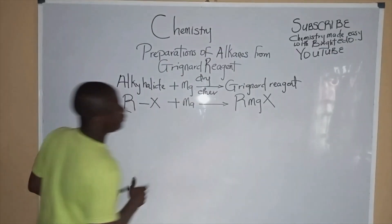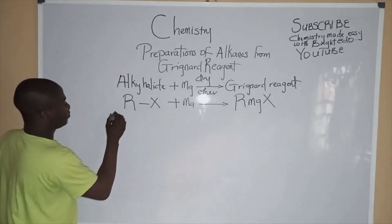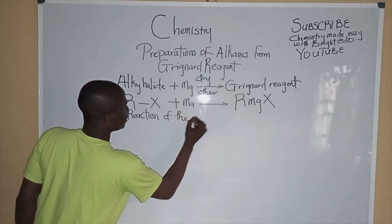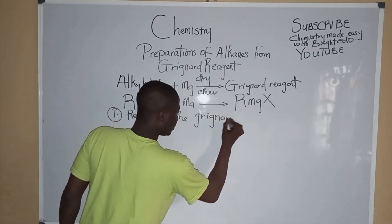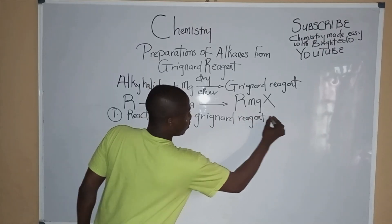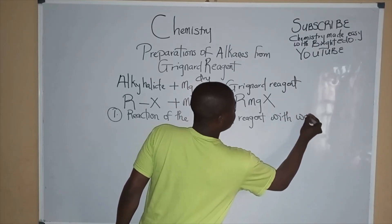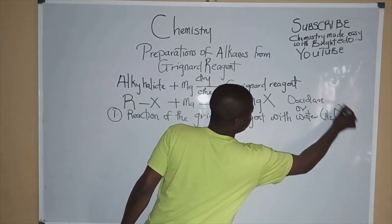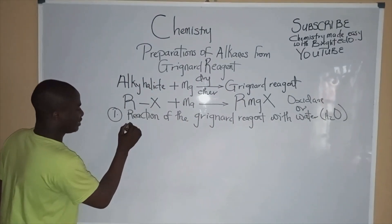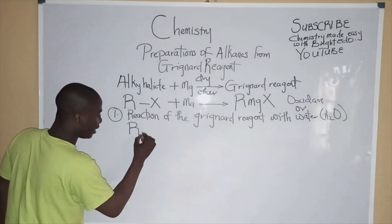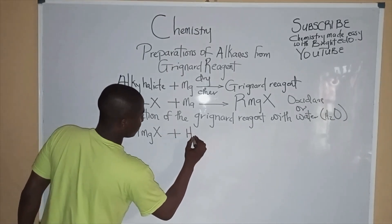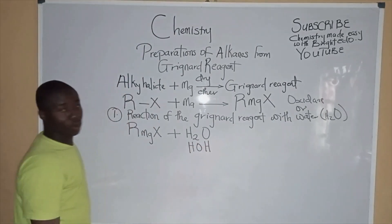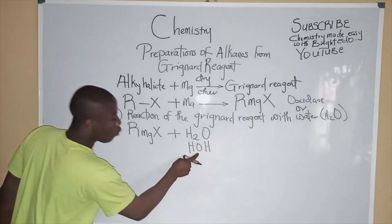This is the Grignard Reagent. Reaction of the Grignard Reagent with water — water is also called oxidane and has the chemical formula H2O, which can also be written as HOH, showing two atoms of hydrogen and one atom of oxygen.